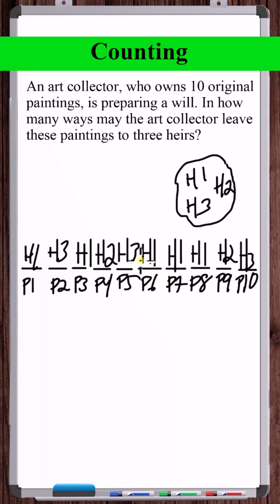If we switch heir one and heir three here, what does that mean? That means heir one gets painting five and heir three gets painting six. That is different. So we do want to count reorderings. And so a permutations with repetition model here would work just fine.